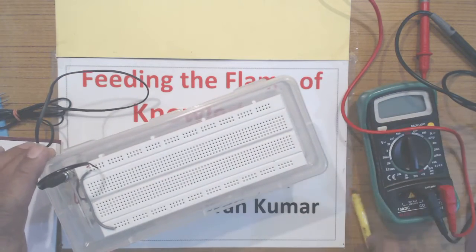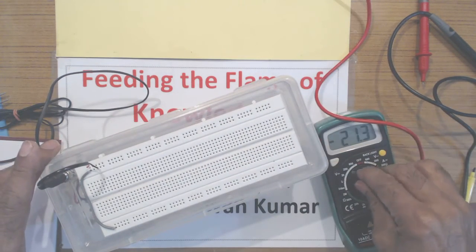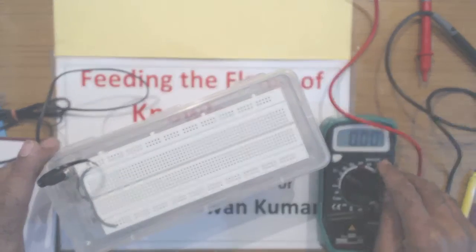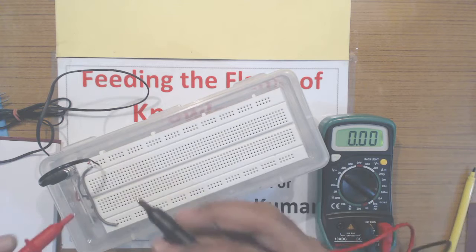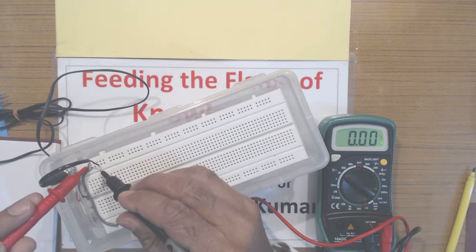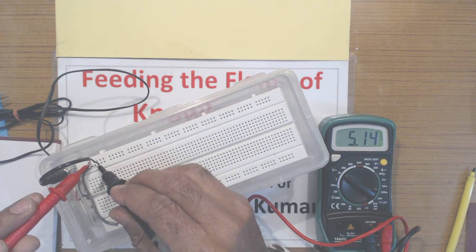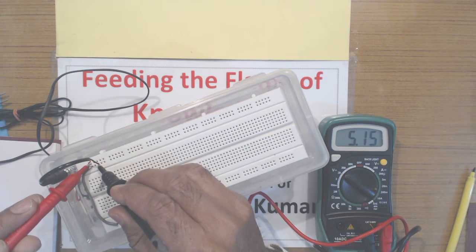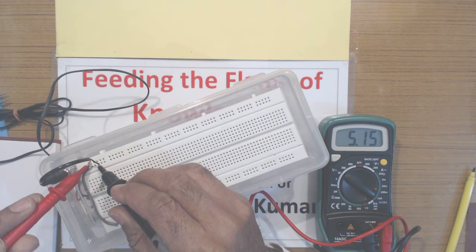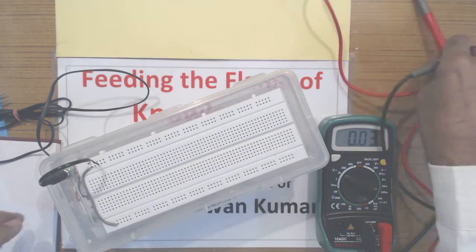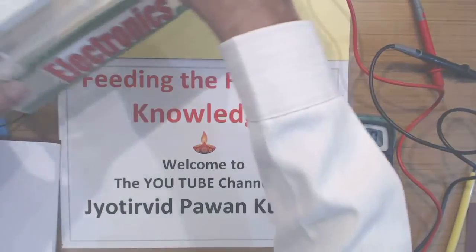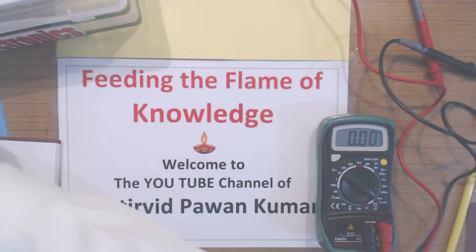So let us see if I am getting plus 5 volt. You can look at the screen of the multimeter - it is showing 5.15 volt DC.